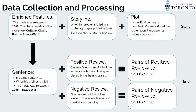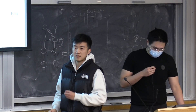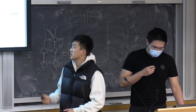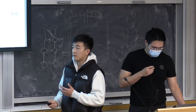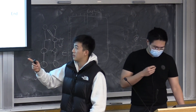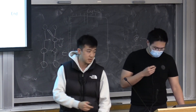For each sentence, we pair it with the positive reviews of Avatar and the negative reviews. What we're trying to do is reduce the distance between the sentence embedding and the positive reviews, and increase the distance between our embeddings and the negative reviews.